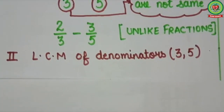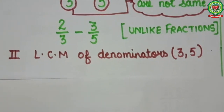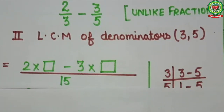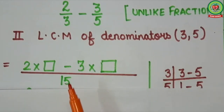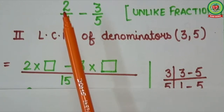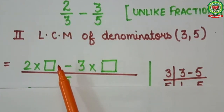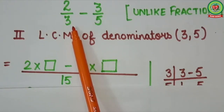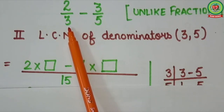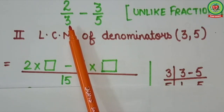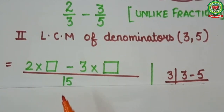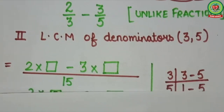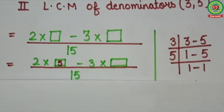Now step 3: change given fractions into like fractions. We need a common denominator for like fractions, so take LCM as common denominator. Now we will multiply numerators with a suitable number so that denominators become equivalent to 15. Check first fraction — denominator equals 3. In table of 3, 15 will come at 5. So in the first bracket I will put 5.